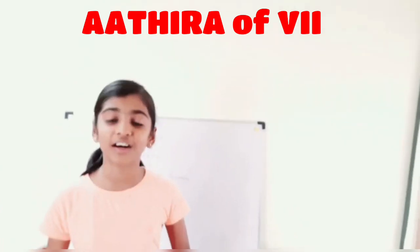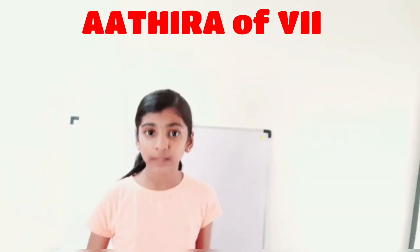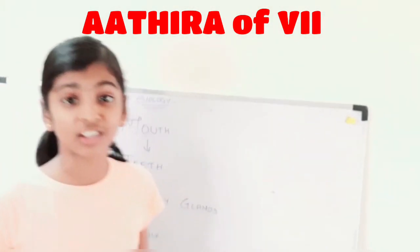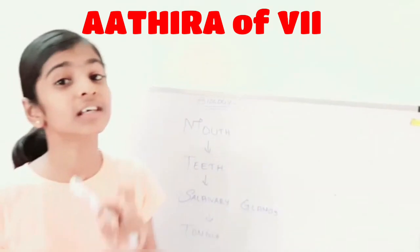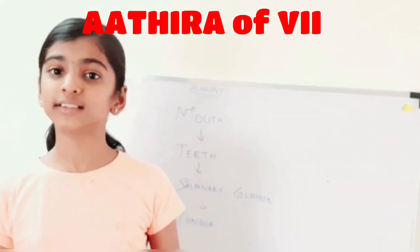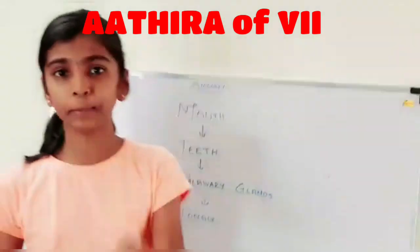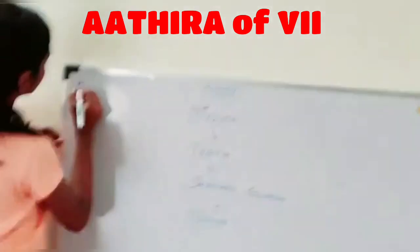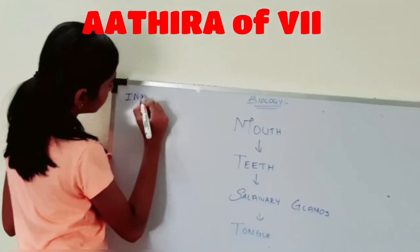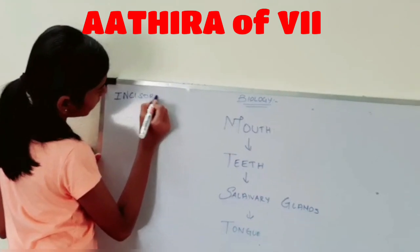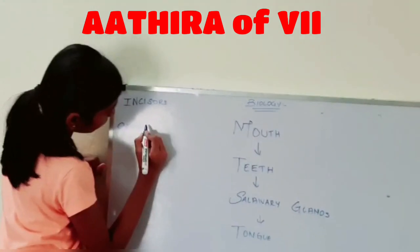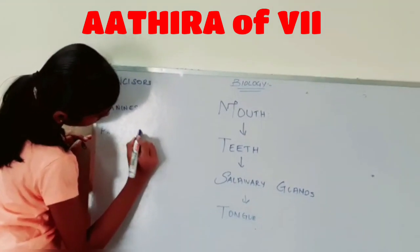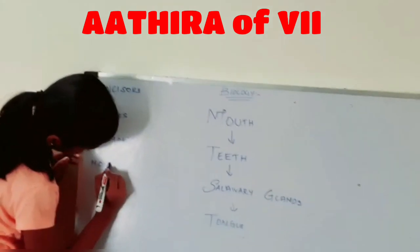Good afternoon everyone. I am Sabira from class 7th year. Today I am going to explain about the mouth. The mouth is involved in ingestion. The process of digestion begins in the mouth. The mouth consists of teeth, salivary glands, and the tongue. Teeth have four types. They are incisors, canines, premolars, and molars.